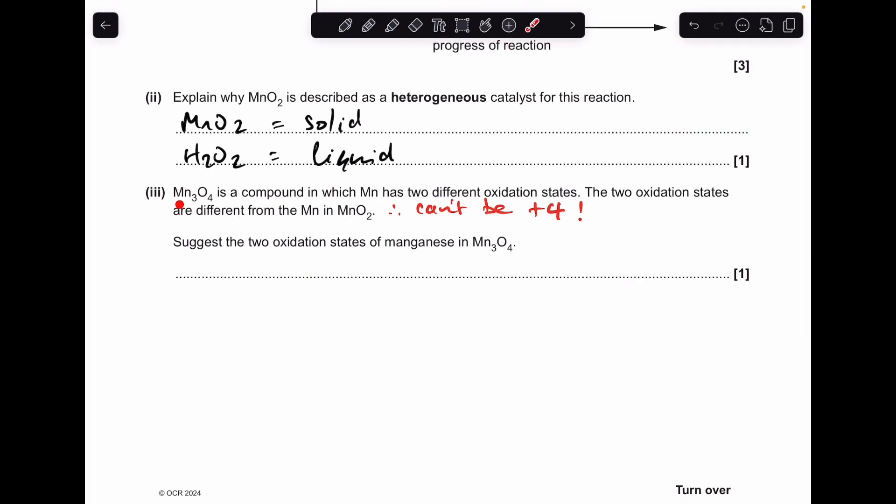And the next part, so we've got Mn₃O₄, it's got two different oxidation states for the manganese, but the oxidation states can't be the same as what manganese is in MnO₂, which is +4. So it can't be +4. So the starting point is going to be the four oxygens. They're at -2 oxidation state each, so that's a total of -8. So basically, these three Mn oxidation states have to add up to +8.